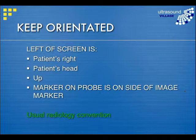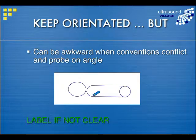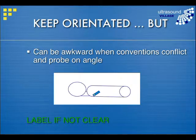There is a standard convention for how images should be orientated — the standard radiology convention. The left-hand side of the screen should represent the patient's right in transverse imaging, or the patient's head in longitudinal imaging. In a vertical image, it's the upside. The marker on the probe should be on the same side as the image marker on the screen. Sometimes conventions can conflict — for example, the marker may be towards the patient's head but also pointing down, which is against convention. If it's unclear, make sure your image is well labelled so anyone can look at it and understand what it represents.